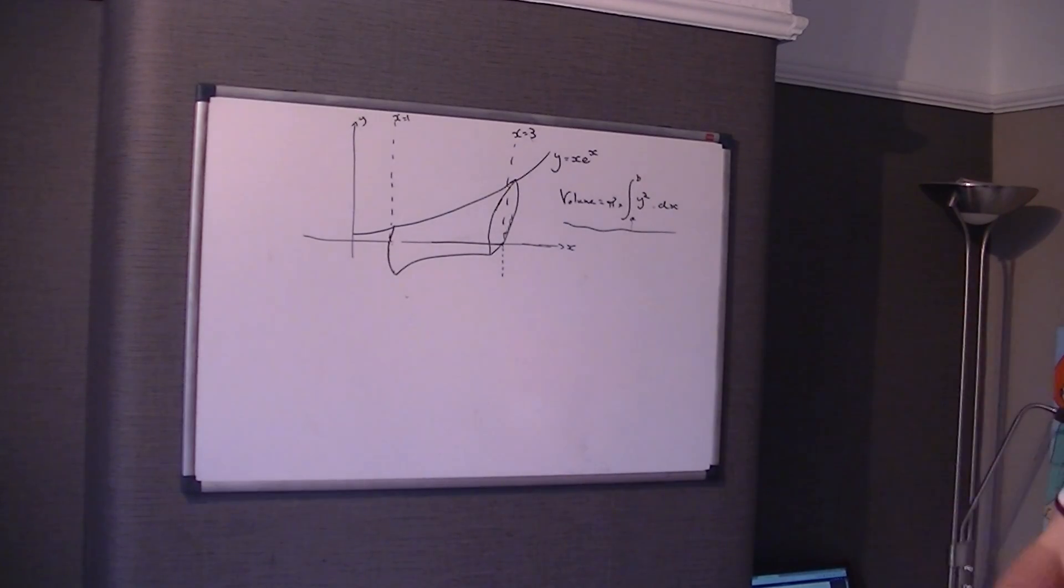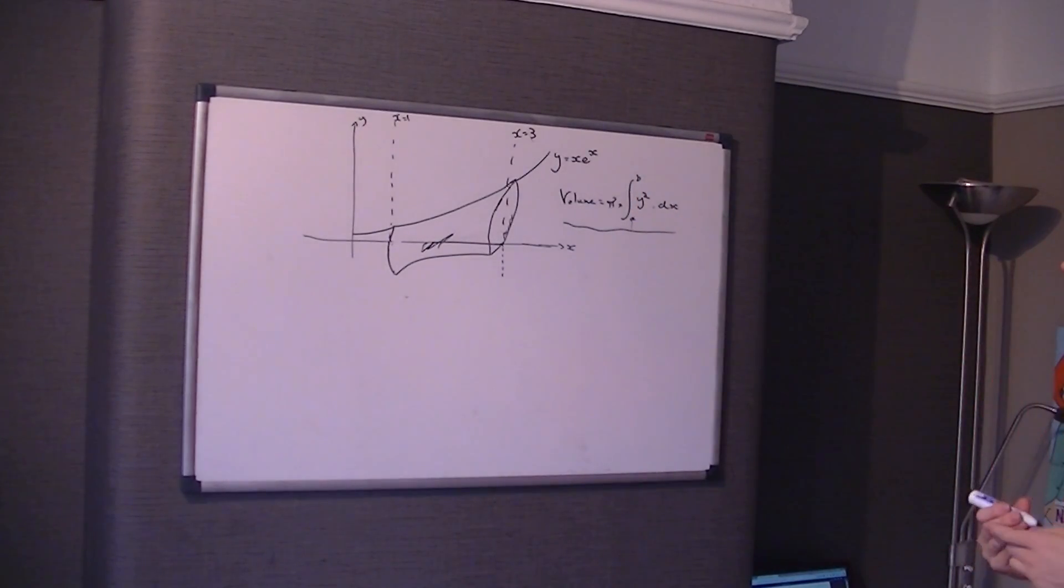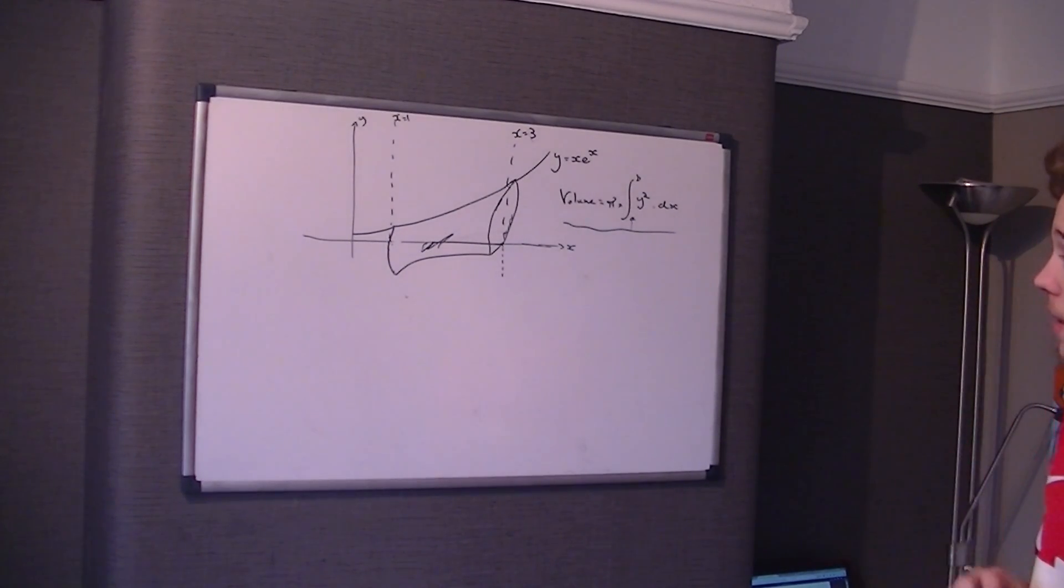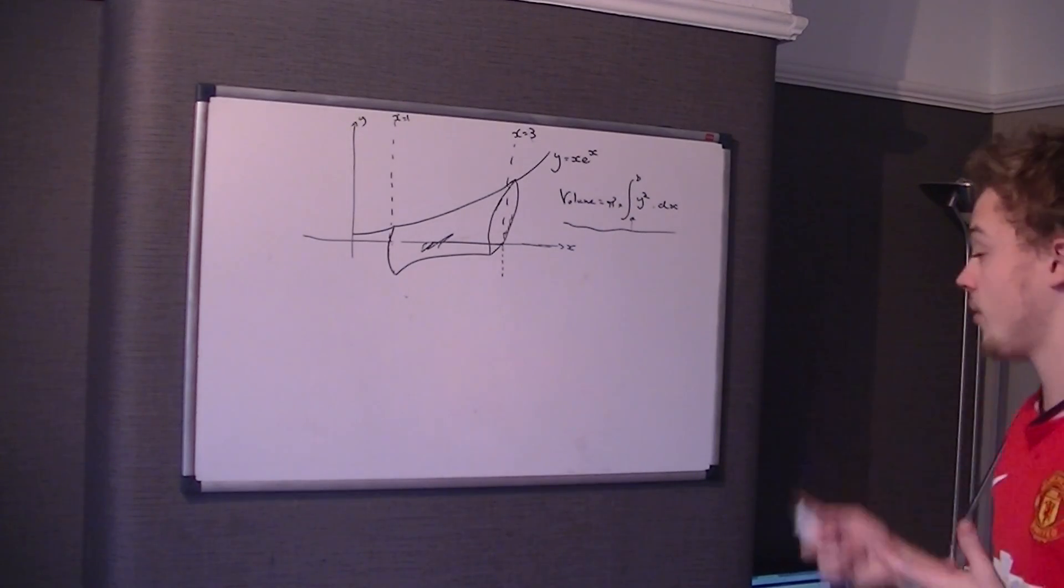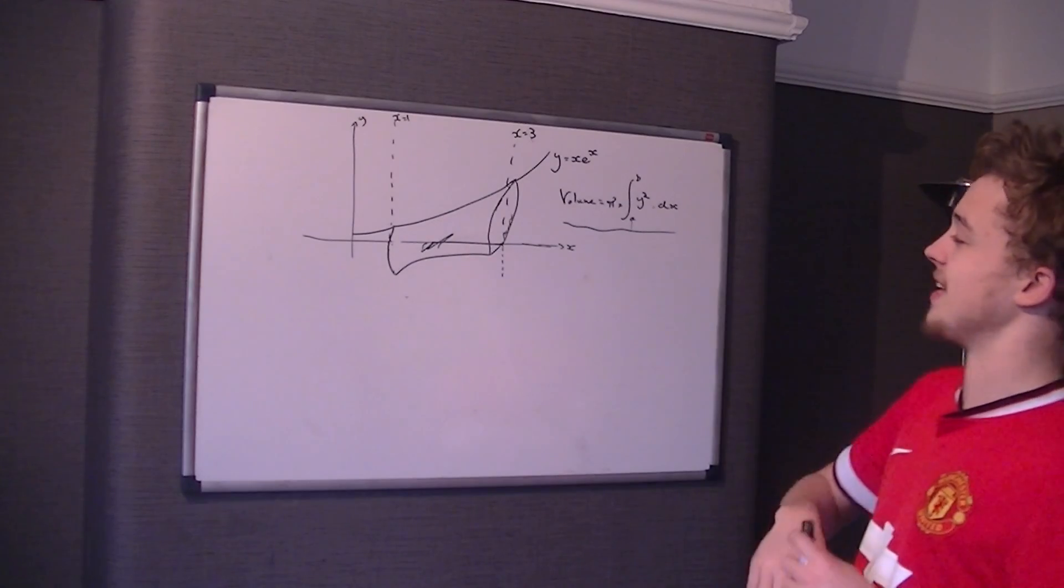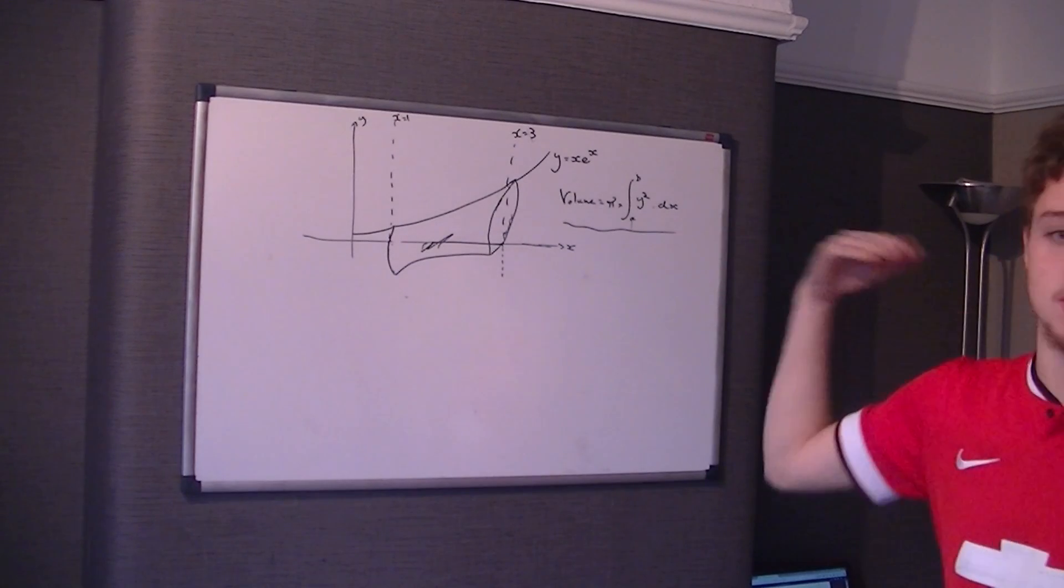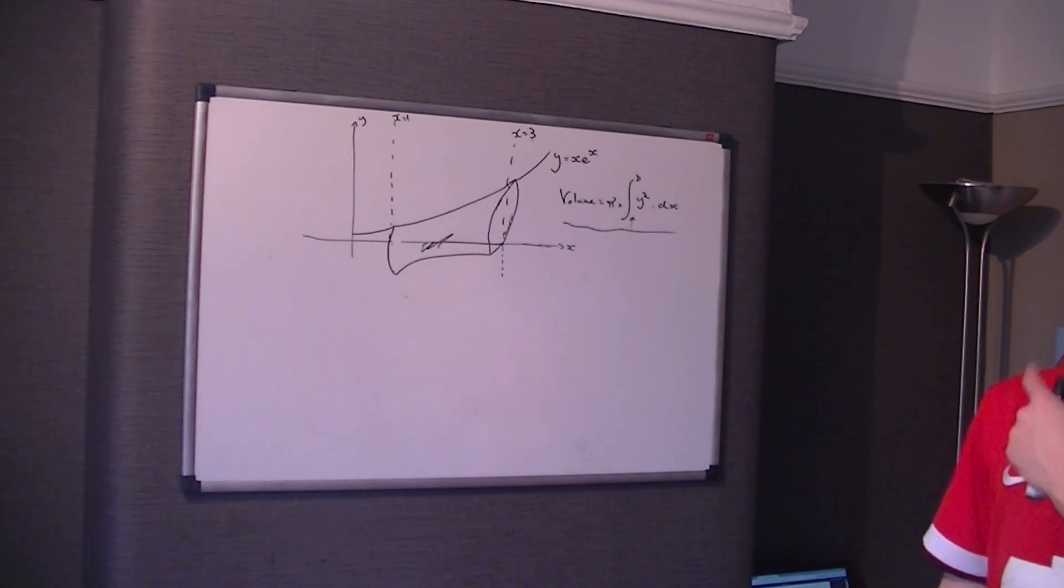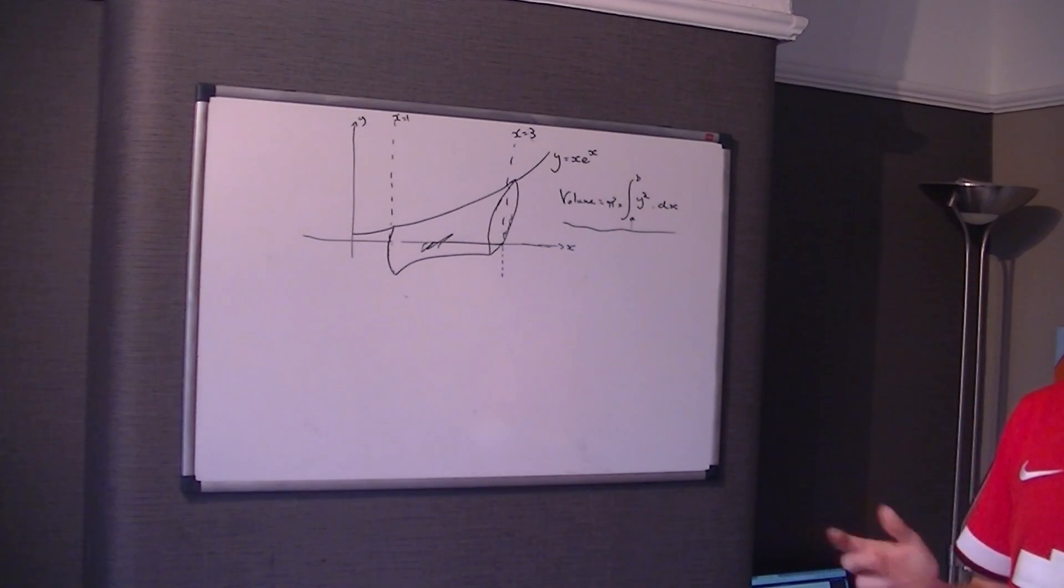Now you're not specifically given this diagram as a 3D graph, you're given it as just a single 2D graph, but the question asks you to rotate it through 2π radians, 360 degrees, around the x-axis between the points where x equals 3 and x equals 1, so I've tried to draw that. You get the main idea of the graph here.